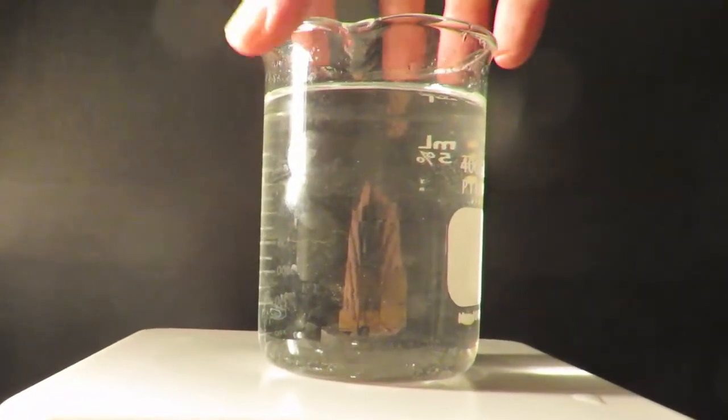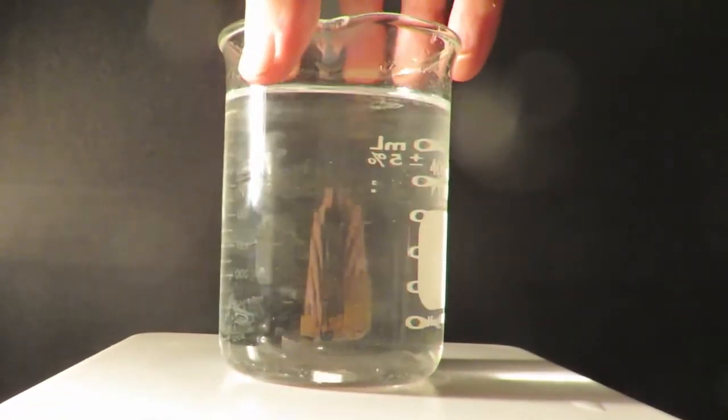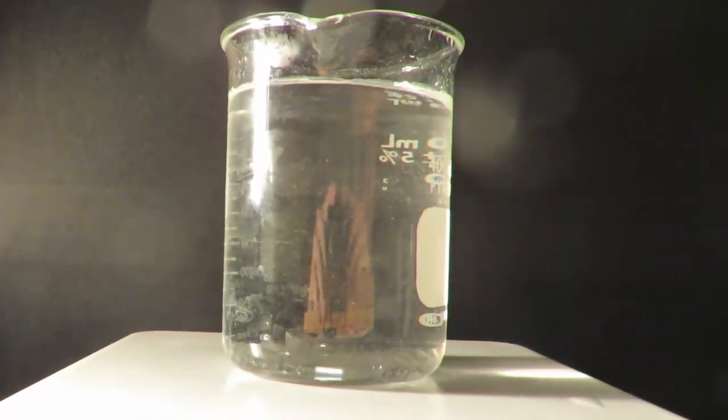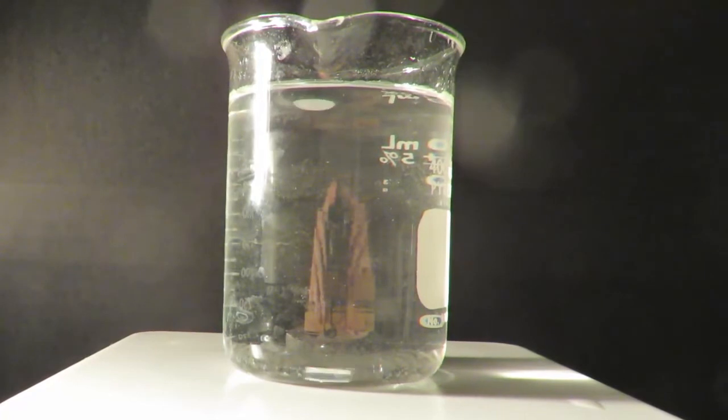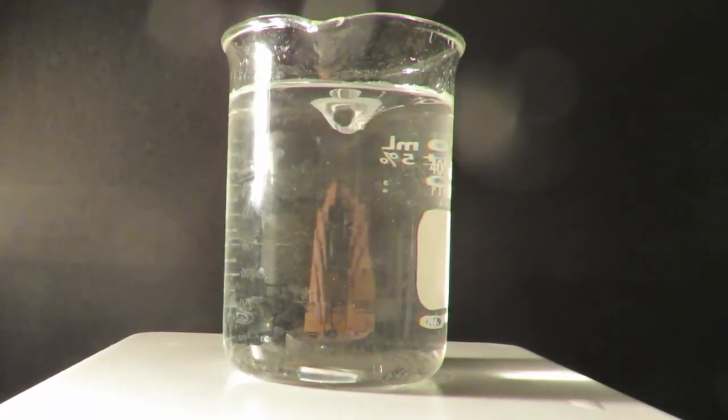We'll center the beaker on the magnetic stir plate so that it's right in the middle there, and we turn it on and it starts spinning. It actually does a pretty good job. You can see the funnel starting to come down as the water swirls.